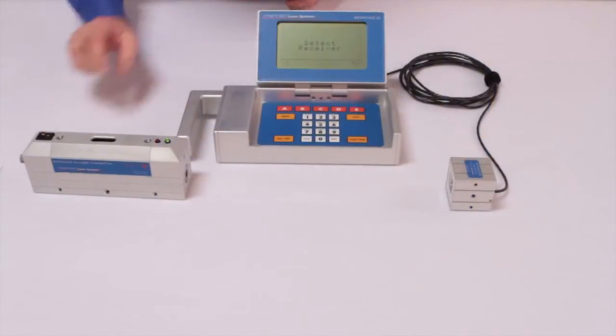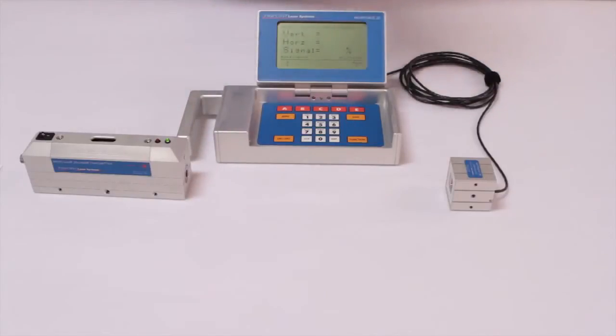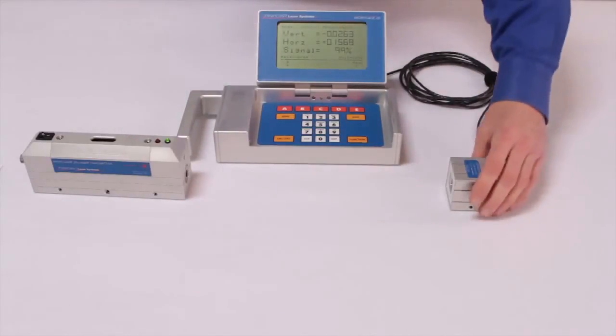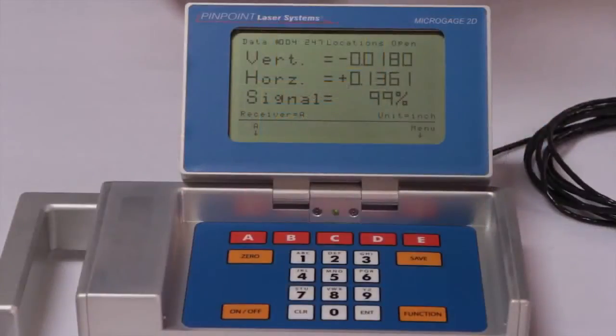With the receiver connected to the display and the laser, you are now ready to make a measurement. As the micro gauge receiver is moved in any direction, the display values will change relative to the laser reference beam.